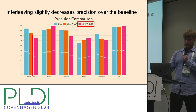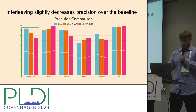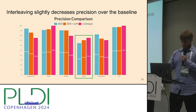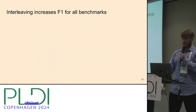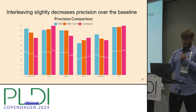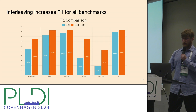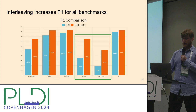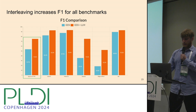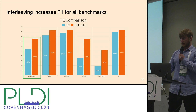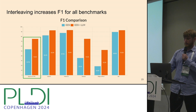The largest precision drop-off is within Apache. But we also see instances where we improve precision, like in net data where precision was relatively low to begin with. More importantly, we increased F1 — the harmonic mean between precision and recall — with the biggest increases in net data and Pidgin. In HTTPD, even though we lost precision, our F1 increased quite significantly.